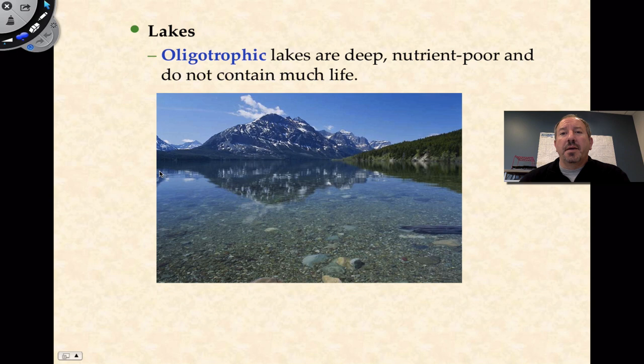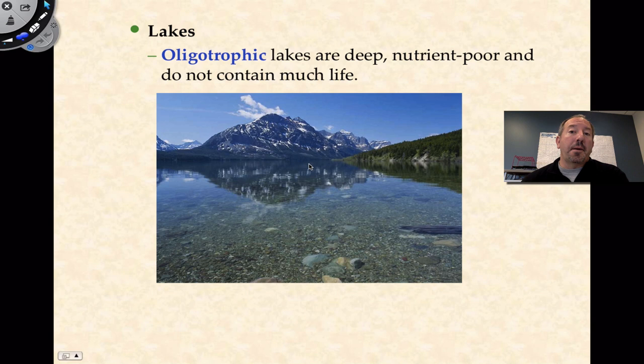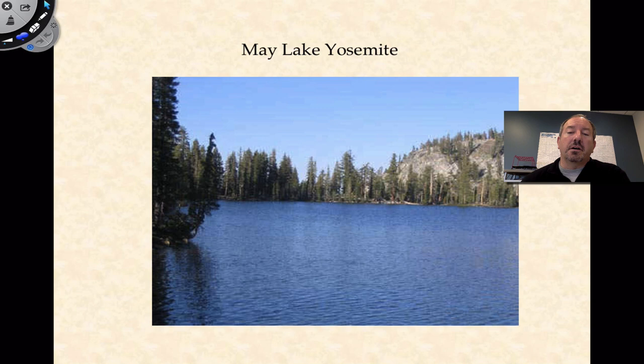You can classify lakes based on how much nutrient is in the lake. An oligotrophic lake — 'oligo' meaning few — is nutrient poor, often cold. As a result of being nutrient poor, there's not a lot of phytoplankton, therefore not a lot of zooplankton, not a lot of fish. The water tends to be very clear and there's not much life. They're rather beautiful — like a beautiful blue high Sierra lake. An example is May Lake in Yosemite, which is oligotrophic and really clear.